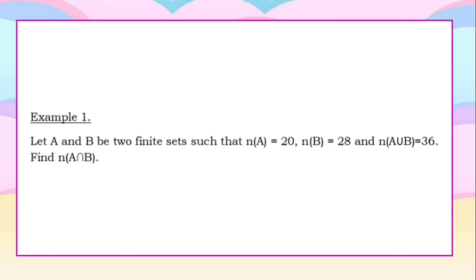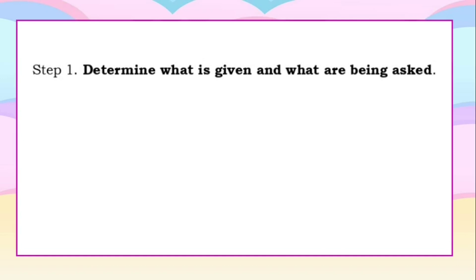Now let's try an example. For our first example, let A and B be two finite sets such that the cardinality of set A is equal to 20, the cardinality of set B is equal to 28, and the cardinality of set A union B is equal to 36. Find the cardinality of set A intersect set B.